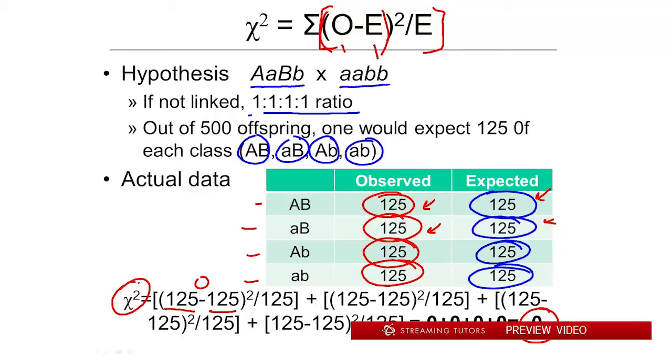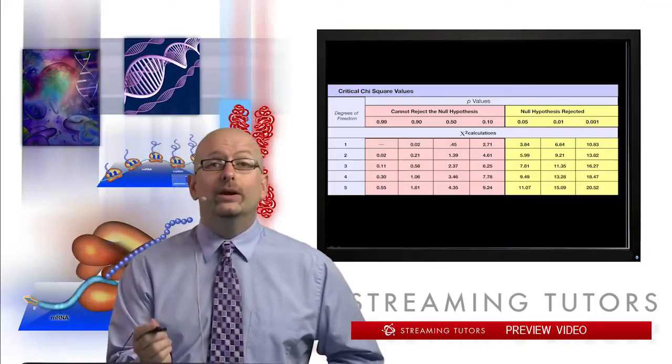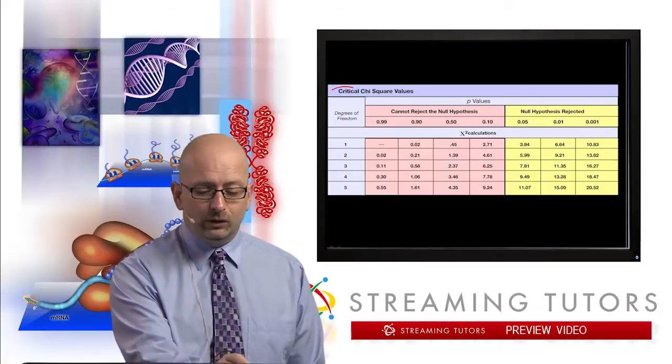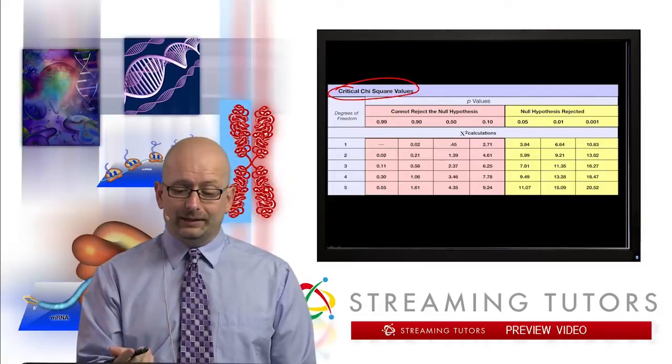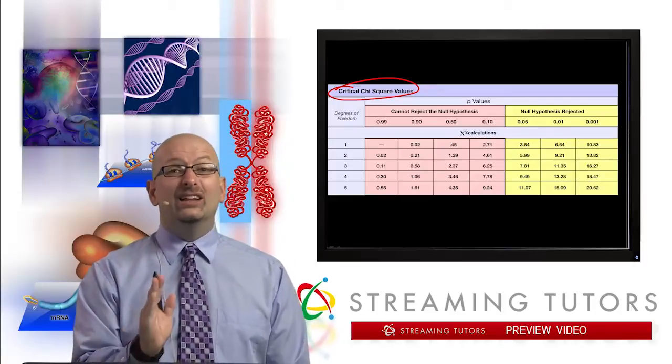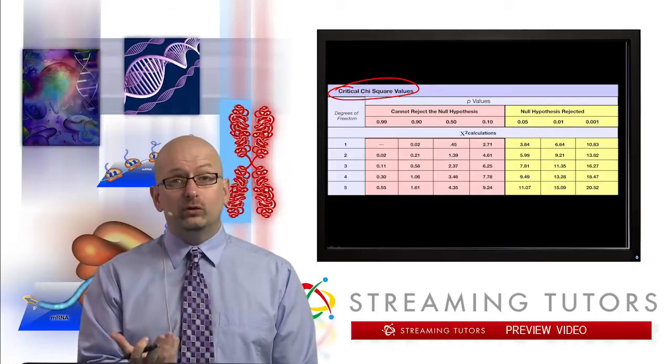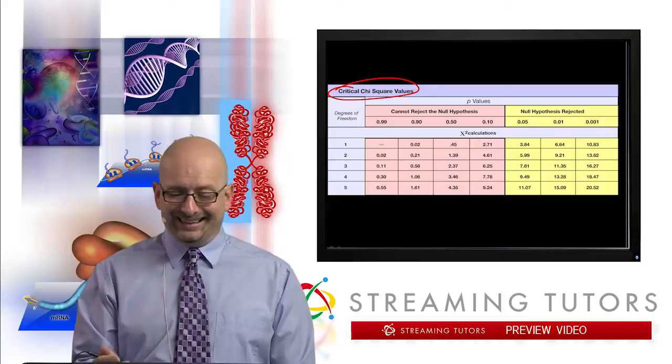Now you can go through every single one of these. We're adding them all together, but they're all going to be zeros. And you can see down here that obviously zero plus zero plus zero plus zero equals zero. Now this is an idealized situation, but we end up with a chi-square value of zero. So the only way to interpret this type of data is that you have to be provided with a so-called chi-square value table.